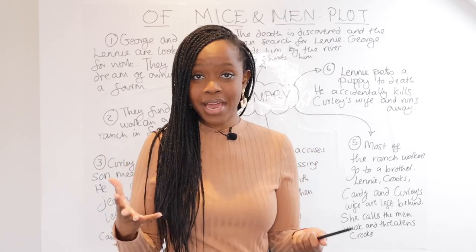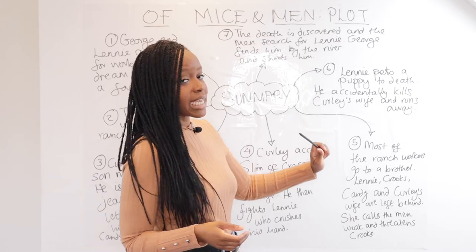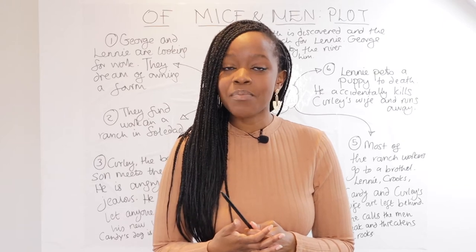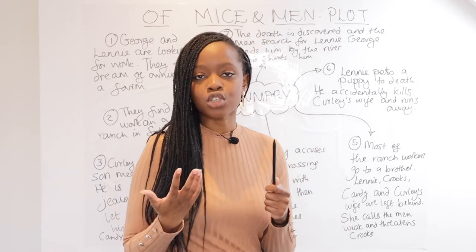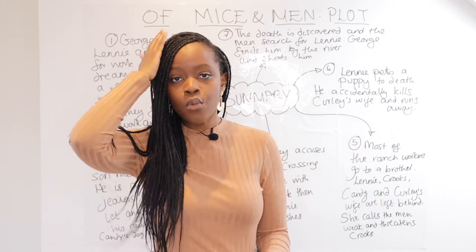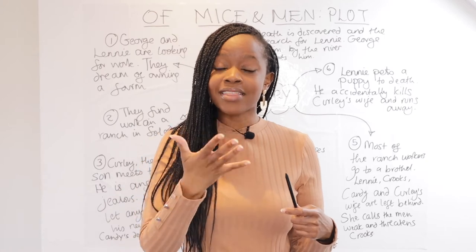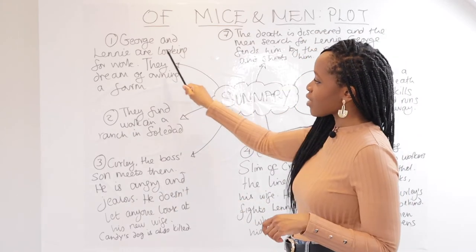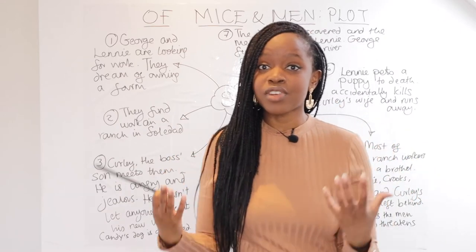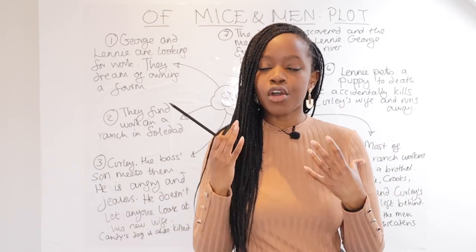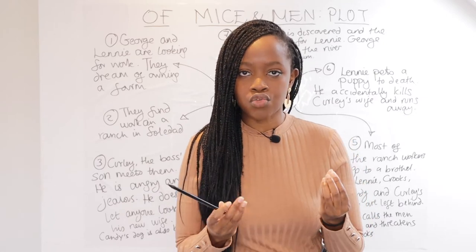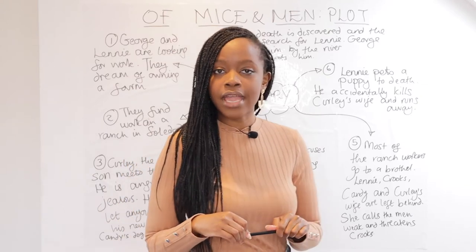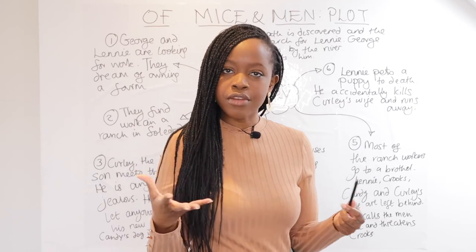The sixth major event is that Lennie accidentally pets one of his puppies to death, which foreshadows the accidental killing of Curly's wife. When he pats her hair too much, she panics, and he smothers and accidentally kills her. This ties into the opening — we now realize the main obstacle standing between George and Lennie's dream of owning a ranch is Lennie's own unwieldy strength, which he is unable to control. Lennie runs back to the river, where George and he had promised to wait for each other in case of trouble.